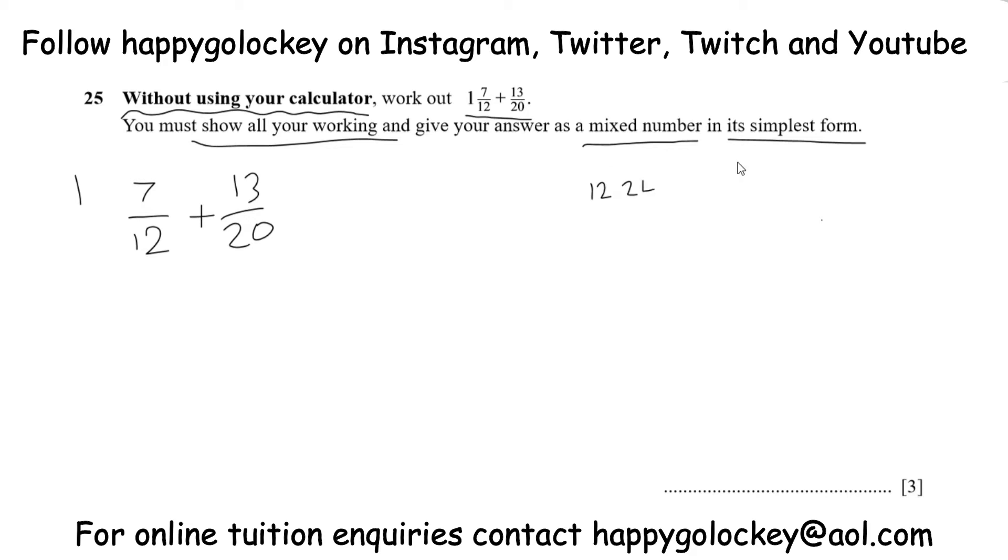12, 24, 36, and so on. And then you can do the same with 20s. 20, 40, 60, and bingo, we've got a match. So they both go into 60.